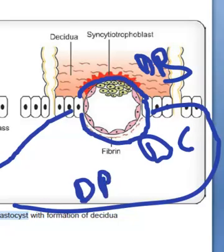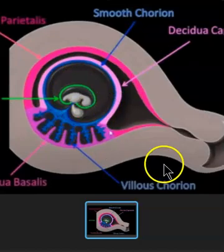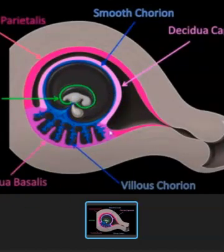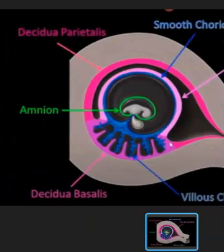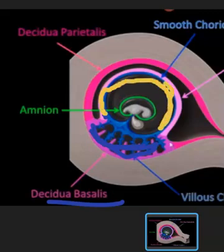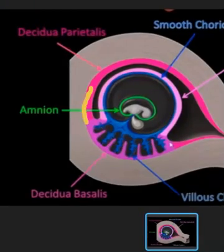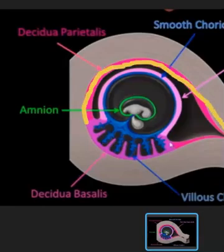Now let us look at our diagram. Wherever it implanted, that gets the name Decidua basalis — we can see that here. And around the embryo, we have the Decidua capsularis. The remaining part of the endometrium gets the term Decidua parietalis.